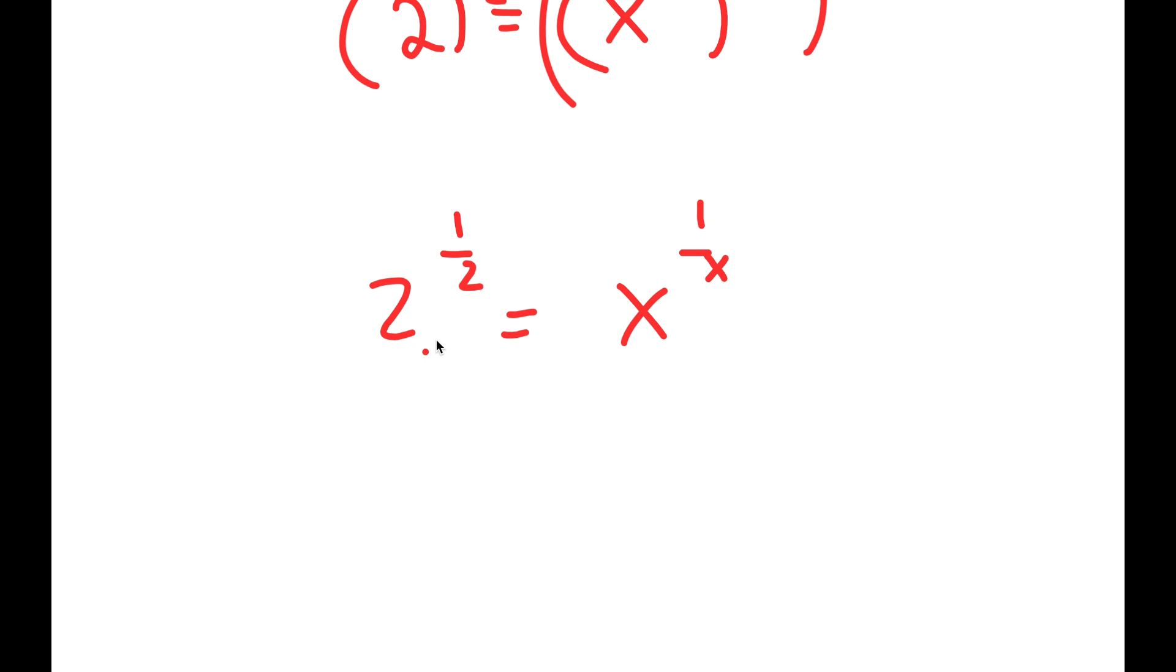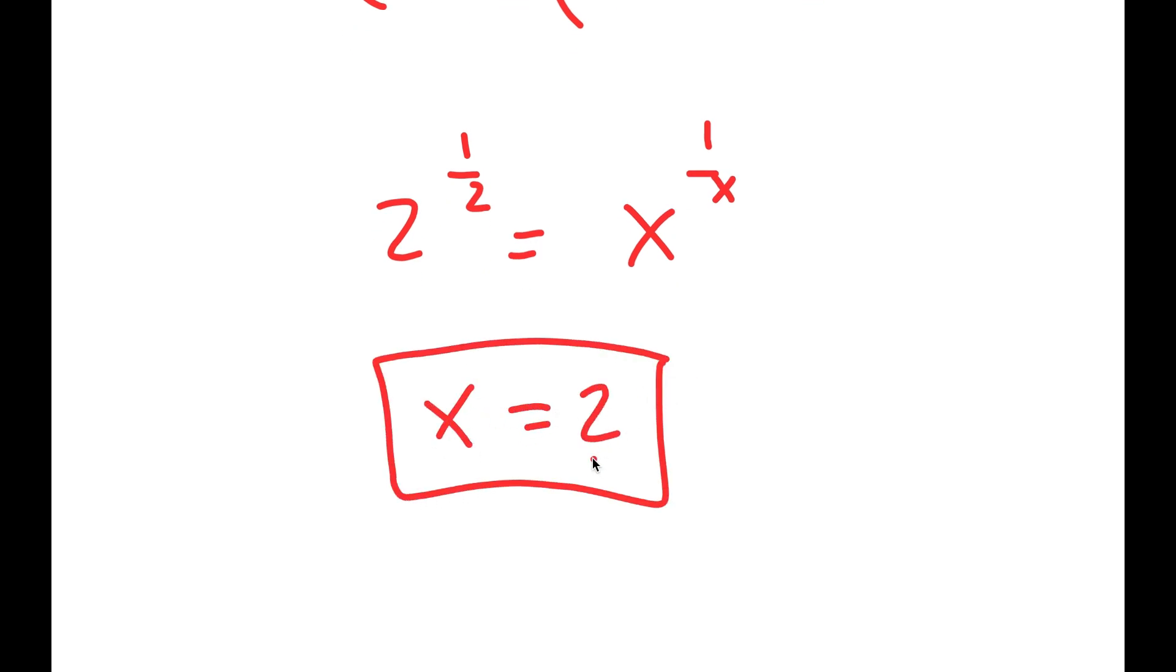So because this is in the form some number to the power of 1 over that same number is equal to x to the power of 1 over x, x is equal to 2. So this is my answer.